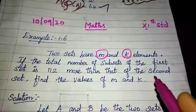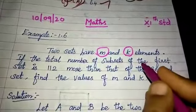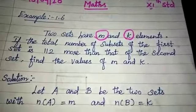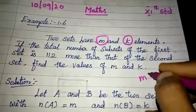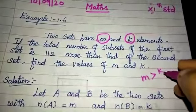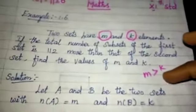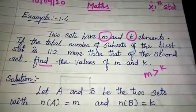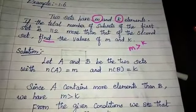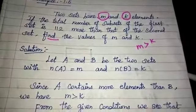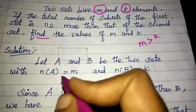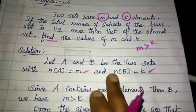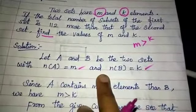If the total number of subsets of the first set is 112 more than that of the second set. Let A and B be the two sets, with n(A) equal to M and n(B) equal to K.